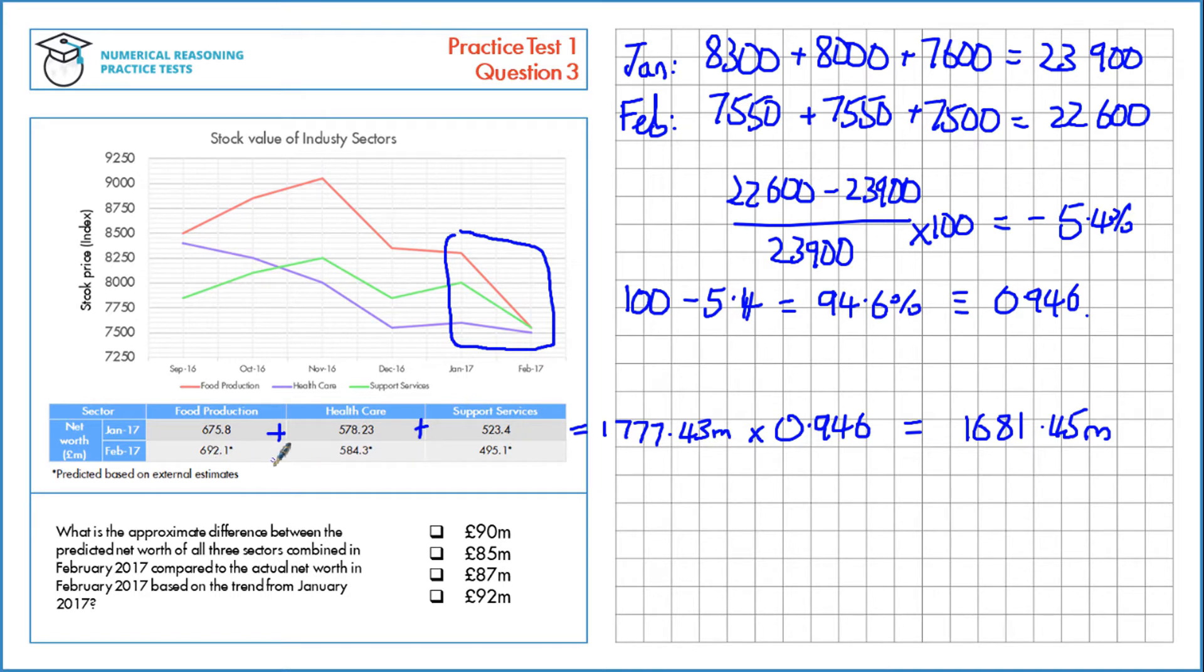We want the difference between that and this prediction. If we add these three up, we get 1,771.5 million. We just need to find the difference between these two, which is approximately 90 million.